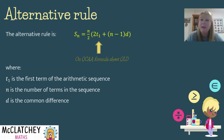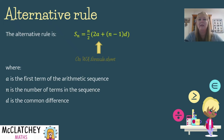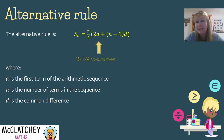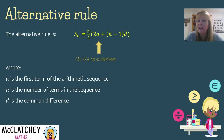If you're in Western Australia, the rule looks slightly different — it uses 2a instead of 2t1. That's the only difference between the Queensland and Western Australia formulas: a represents the first term. In this video we're going to use t1 for term 1, so if you're joining us from Western Australia, please bear that in mind.